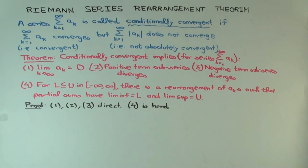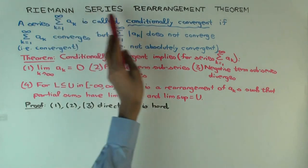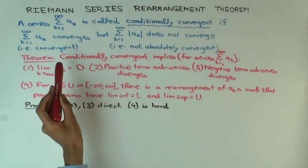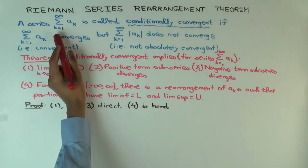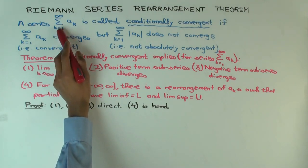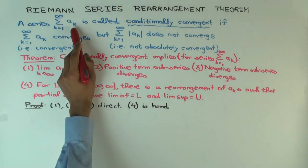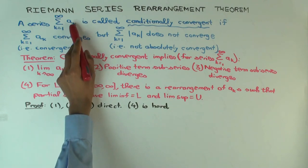This talk is going to be about the Riemann series rearrangement theorem — some people just call it the Riemann series theorem. It's about certain kinds of series. A series is something like the summation k equals 1 to infinity of a sub k, which is an infinite sum.